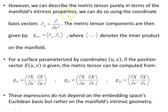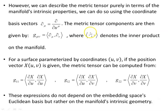We can describe the metric tensor purely in terms of the manifold's intrinsic properties using the coordinate basis vectors ∂_μ, written in differential geometry notation as ∂/∂u^μ. The metric tensor components are then given by g_μν as the inner product of these basis vectors, where the inner product takes vectors as arguments and generates a scalar.